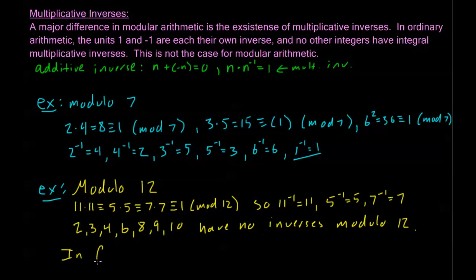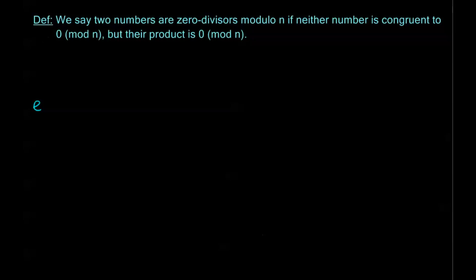We have an interesting property with all of these numbers. If I look at 2 times 6: 2 times 6 equals 12, which is congruent to 0 mod 12. In ordinary arithmetic, this can't happen — we can't take two non-zero integers, multiply them together, and get a product that is 0. This only happens in modular arithmetic, and we have a special name for it: zero divisors. We say that two numbers are zero divisors modulo n if neither number is congruent to 0 mod n, but their product is congruent to 0 mod n.